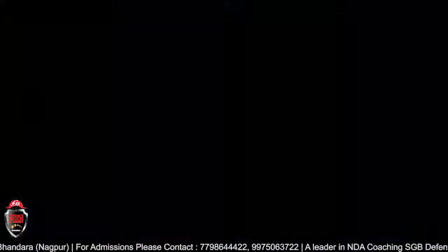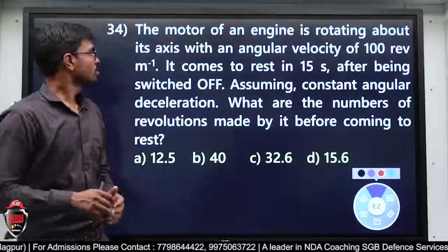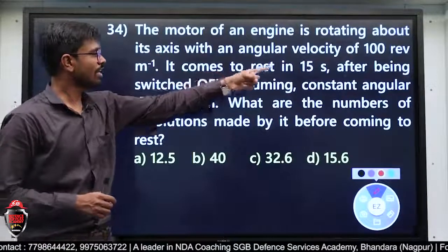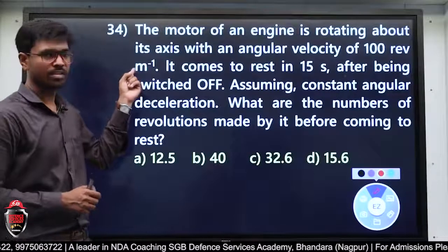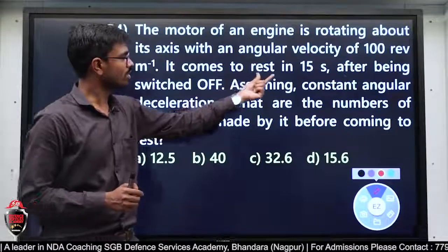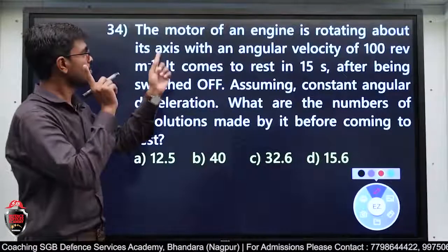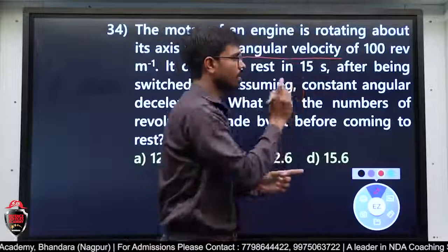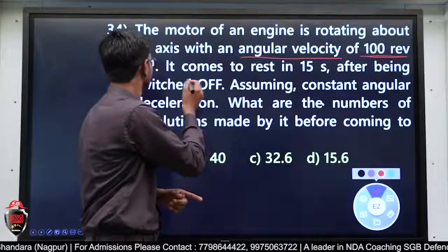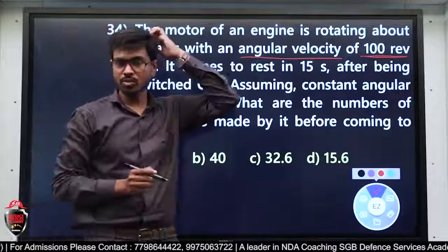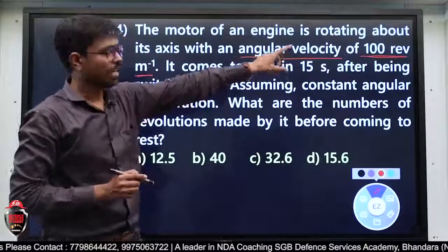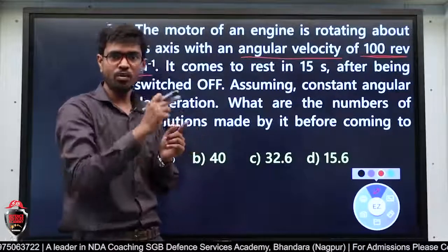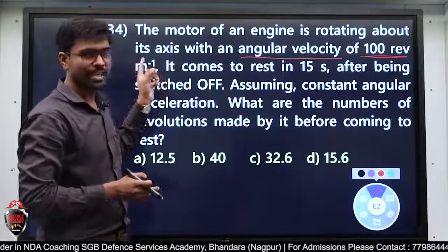अभी हम next problem की तरफ जाते हैं। The motor of an engine is rotating about its axis with an angular velocity of 100 revolution per minute। It comes to rest in 15 seconds। यहाँ ध्यान देना है — angular velocity लिखा है, लेकिन 100 revolution per minute दिया है, यानी rpm — वो n है, omega नहीं। Unit की तरफ ध्यान देना।